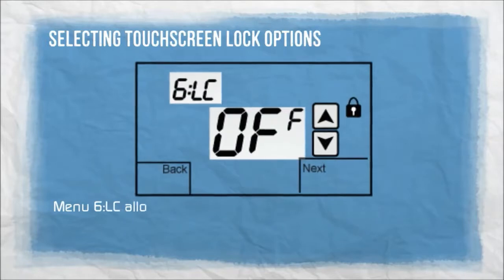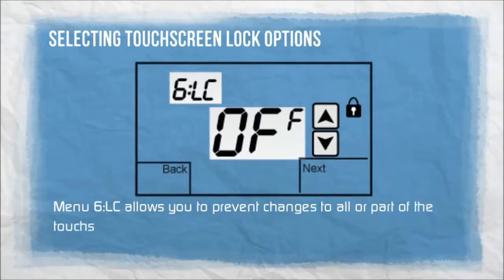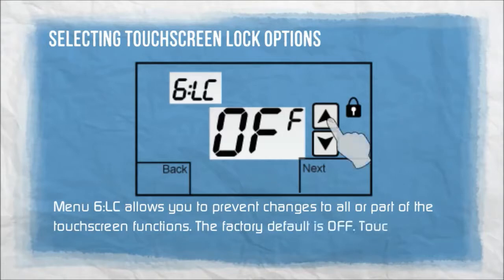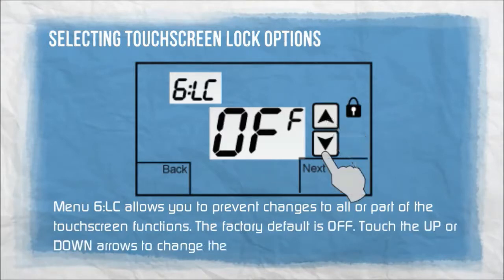Menu 6LC allows you to prevent changes to all or part of the touch screen functions. The factory default is off. Touch the up or down arrows to change the selection.